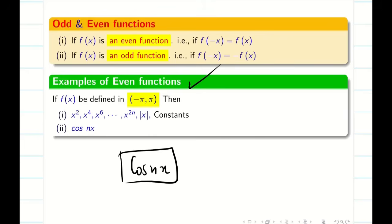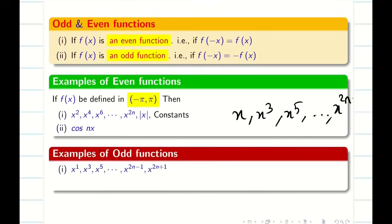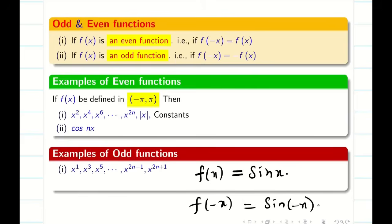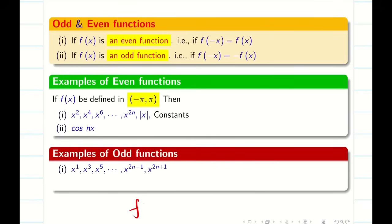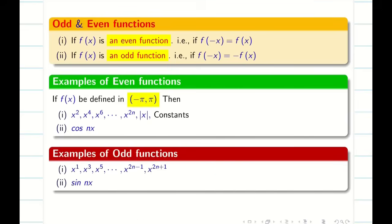For odd functions: if the power of x is odd, like x, x cubed, x to the power 5, or in general x to the power 2n minus 1 or 2n plus 1, it is an odd function. For trigonometry, sin of minus x equals minus sin x, so sin(nx) is an odd function. For example, f of x equals x cubed gives f of minus x equal to minus x cubed, which is minus f of x, confirming it is odd.